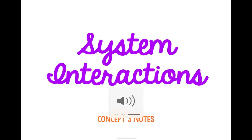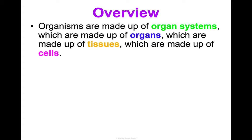This is Concept Three: Notes on System Interactions. As a brief overview before we dive in, organisms are made up of organ systems, which are made up of organs, which are made up of tissues, which are made up of cells. A tissue is a group of cells working together for a common function, an organ is a group of tissues working together, and an organ system is a group of organs working together for a common function. All of your organ systems work together to keep you, the organism, alive and functioning.